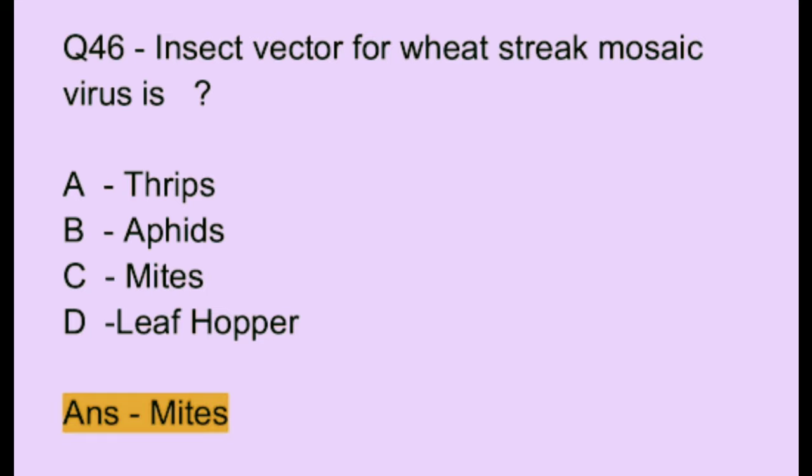Question number 46. Insect vector for wheat streak mosaic virus is: Option A: thrips. Option B: aphids. Option C: mites. Option D: leaf hopper. The correct answer is option C, which is mites.